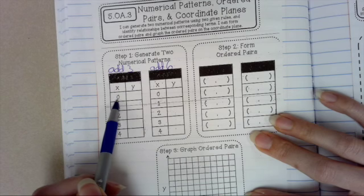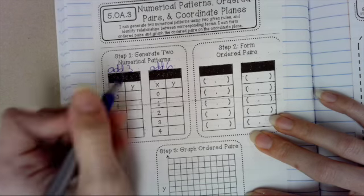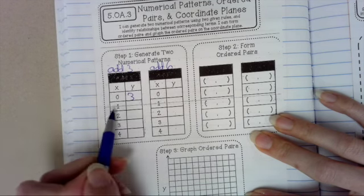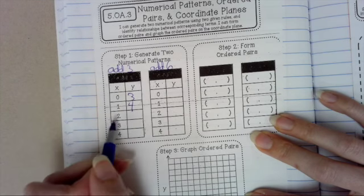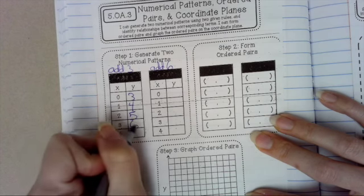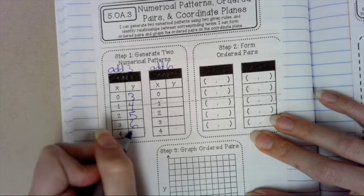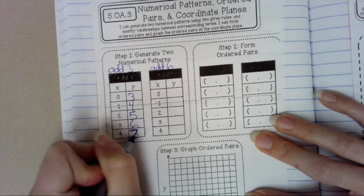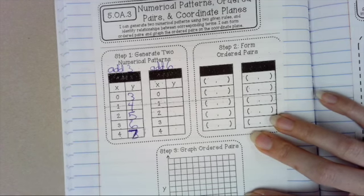So we're going to take the X coordinate and add 3. So 0 plus 3, 3. 1 plus 3, 4. 2 plus 3, 5. 3 plus 3, 6. And 4 plus 3 is 7.